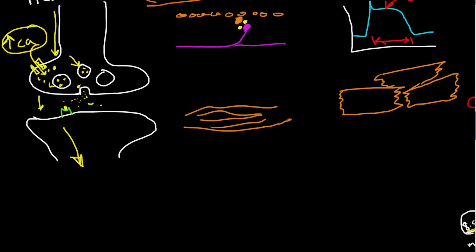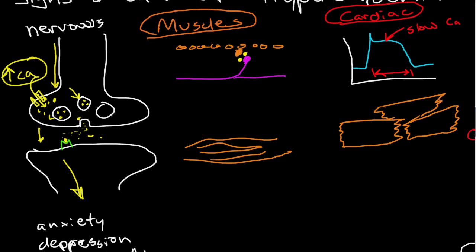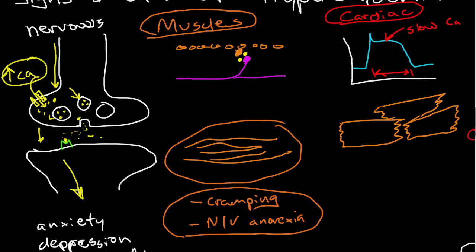From the effects on the nervous system, we see initially anxiety and depression. Rarely, we'll see cognitive changes and mental status changes. This can progress to lethargy and coma when calcium levels get greater than about 14 milligrams per deciliter. With muscles, it's possible to see skeletal muscle weakness, although it's a relatively rare finding. But we do see effects on smooth muscle. In particular, we end up with cramping, nausea, vomiting, and anorexia of the gut.